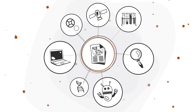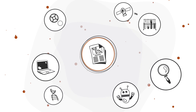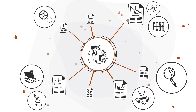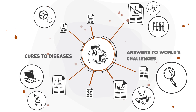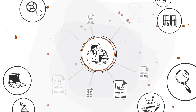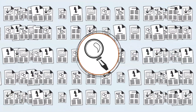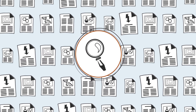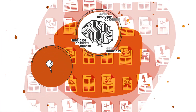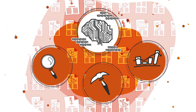Research literature contains some of the most important information we have assembled as a human species, such as cures to diseases and answers to many of the world's challenges. Yet the systematic analyses of huge swathes of this information is simply beyond human capacity. We need algorithms to read, mine and analyse research literature.